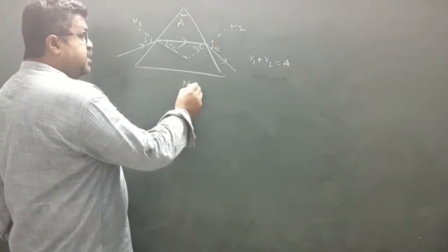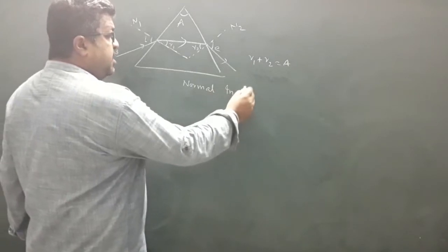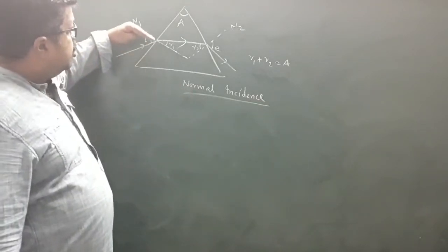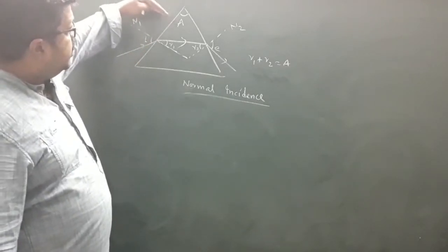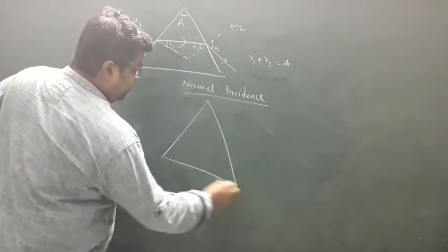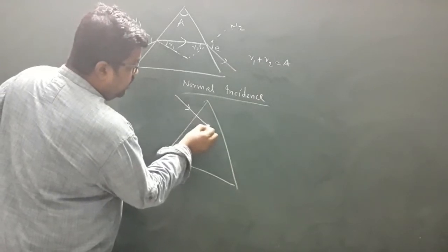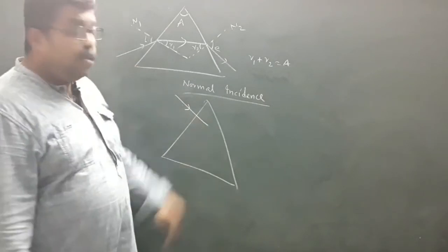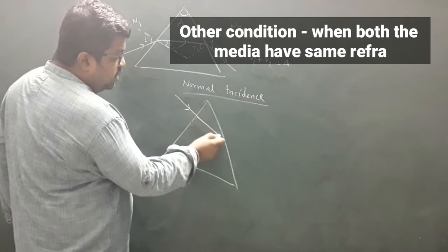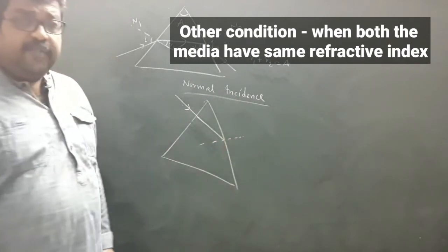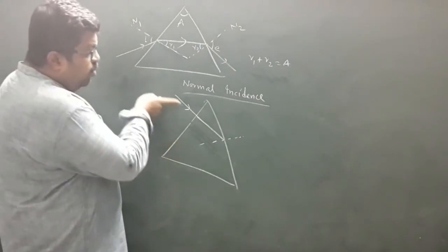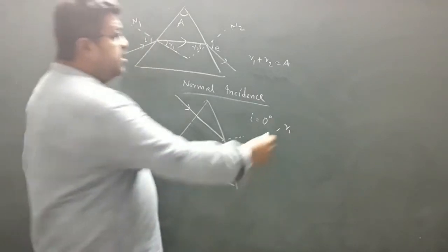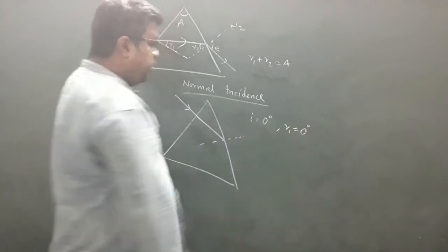First is normal incidence — condition for emergence or non-emergence when the ray is incident normally. If this ray is incident normally to the refracting surface, there will not be any refraction. Normal incidence is one condition for no refraction, so the ray will travel undeviated to the second refracting surface. For normal incidence, the angle of incidence equals 0 degrees, so the angle of refraction at the first refracting surface is also 0 degrees.